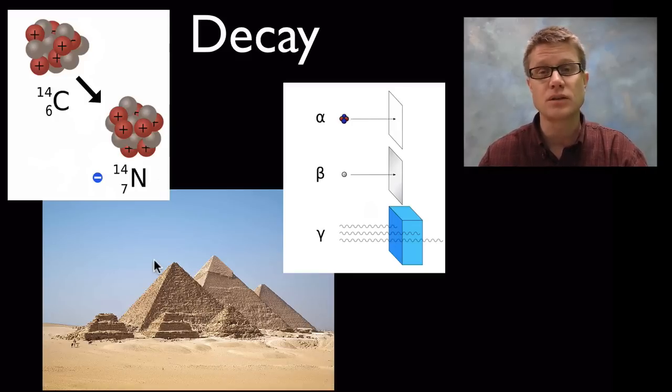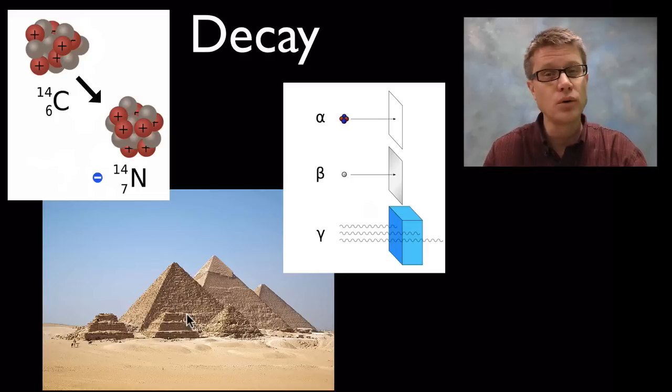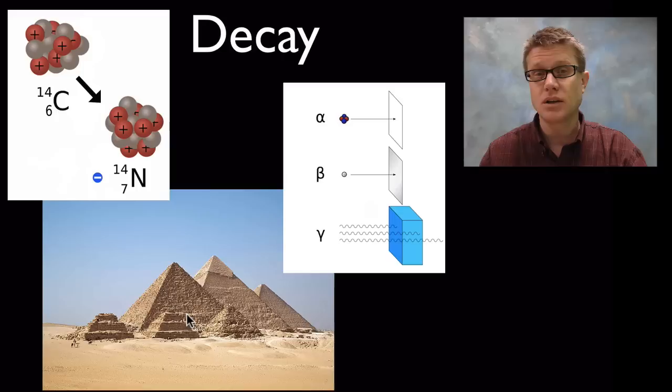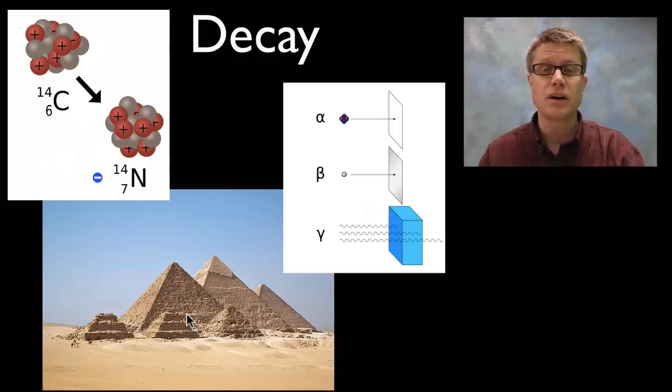As it does that we can measure the rate at which it does that. It's called radiometric dating. We can see how old things are. We could look at the living material, like the wood that was found in tombs, and we can date it using carbon 14 dating. What's nice about that is that we can play that against the written record. We can look at a written record of the pharaohs and we can figure out how accurate it actually is.